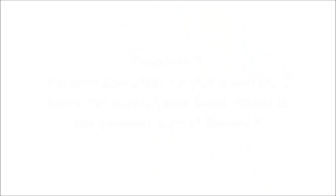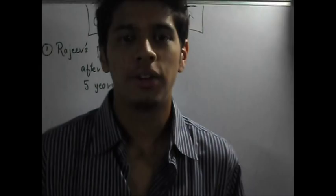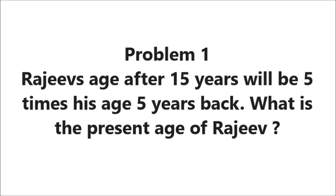Let's start solving our first problem. Problem 1: Rajiv's age after 15 years will be five times his age five years back. What is the present age of Rajiv? The first problem is a simple one. Let's assign Rajiv's present age.